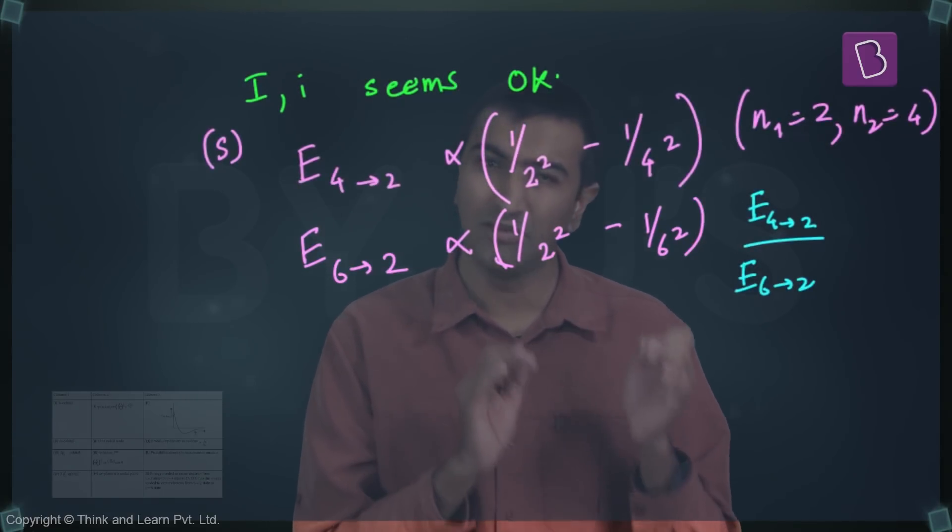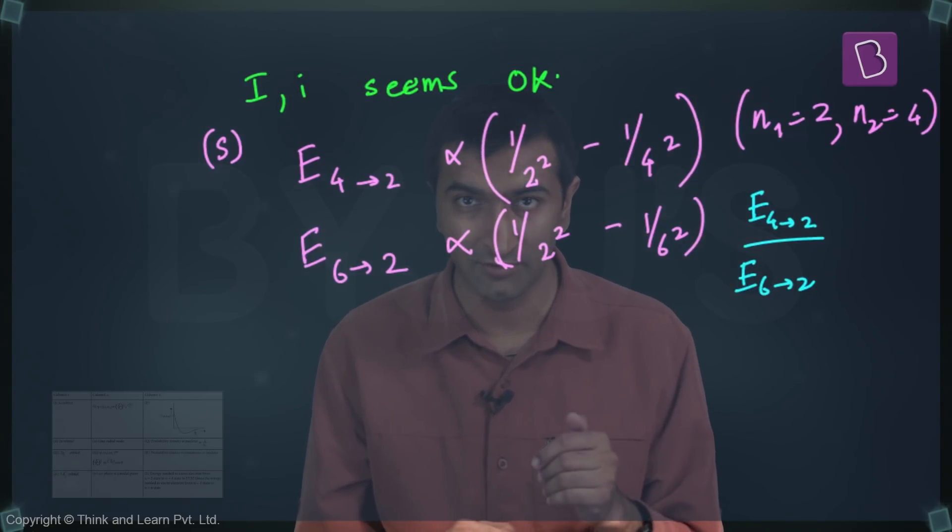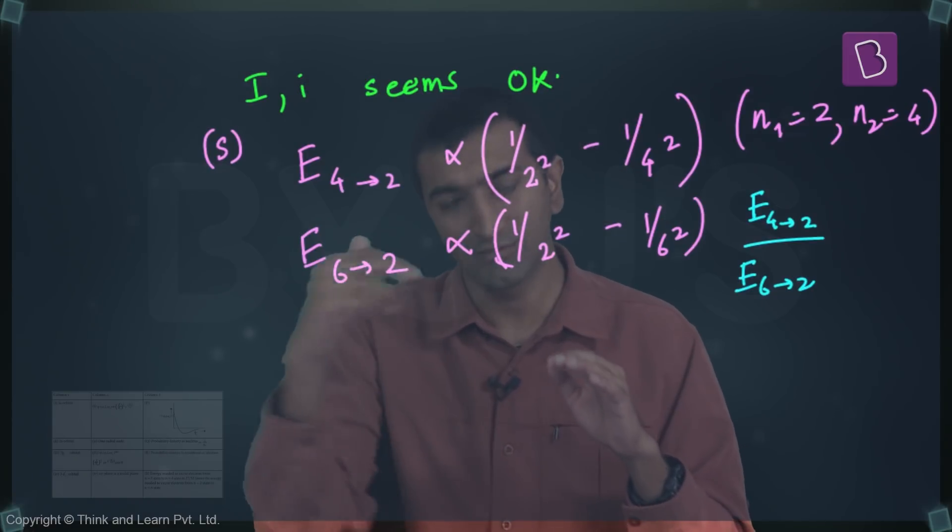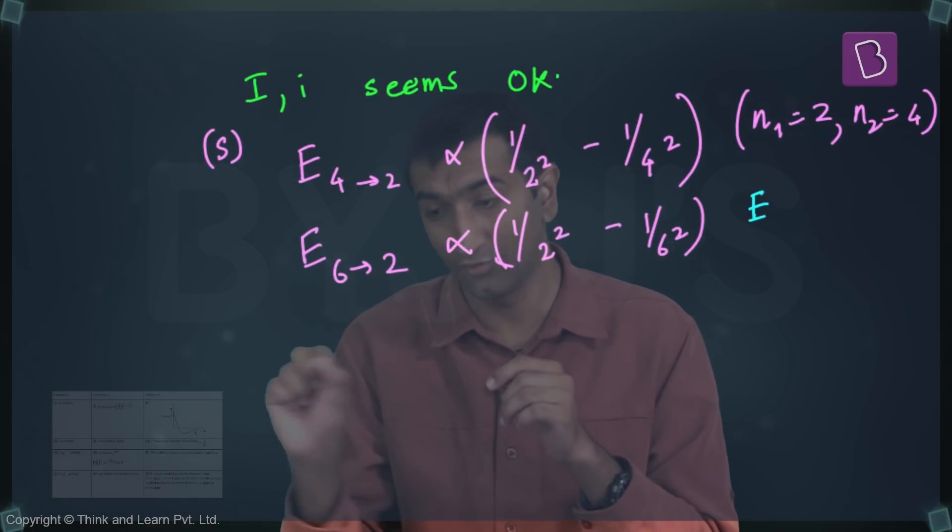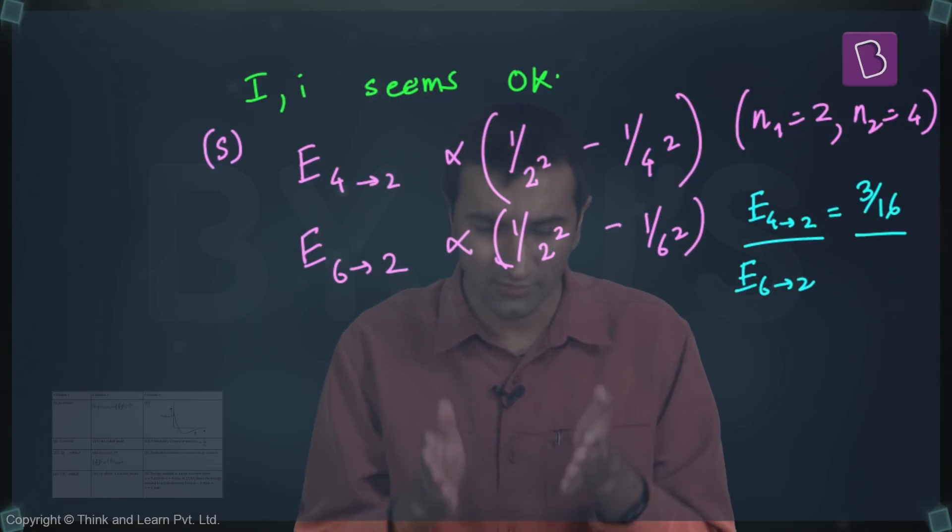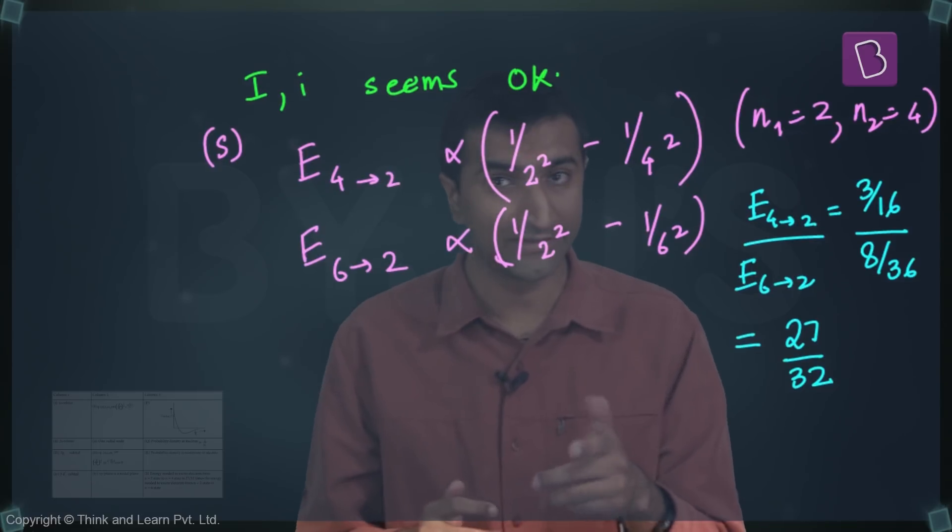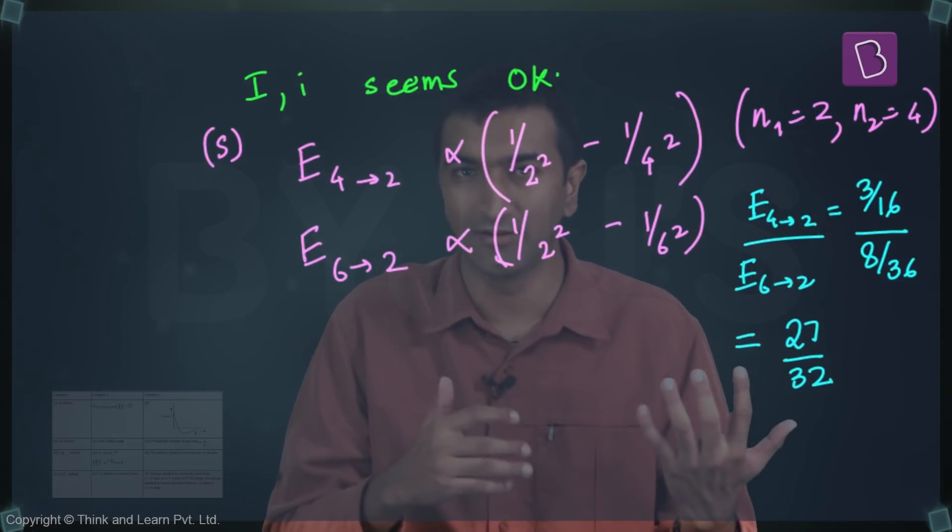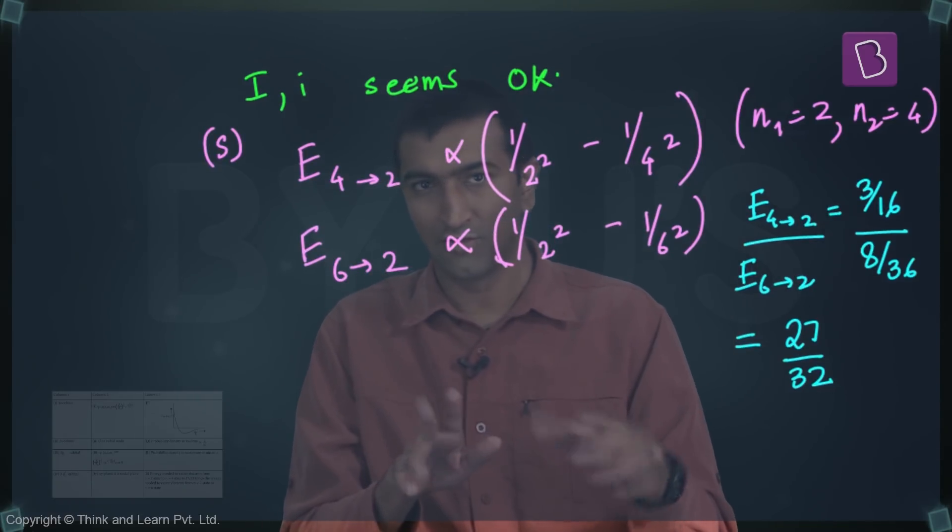Be careful of the substitution of n₁ and n₂ values, this is extremely important here. Once you've done this, the rest is straightforward. You just divide these both, E₄→₂ divided by E₆→₂, and you get this number here which happens to be 27/32. So this matches. Looks like option A is correct, which means not the answer. We'll analyze the next options also.